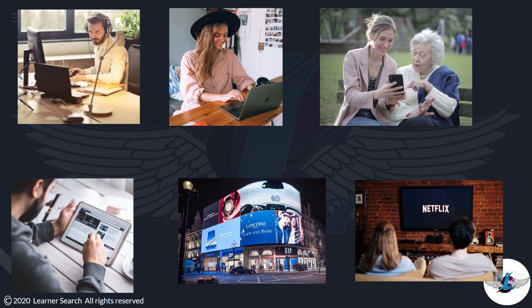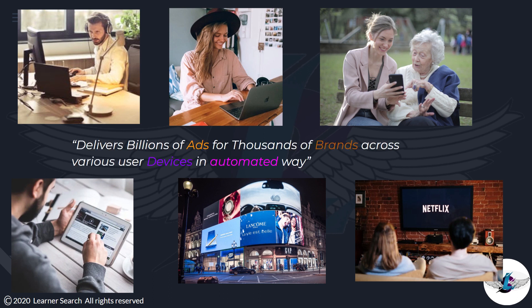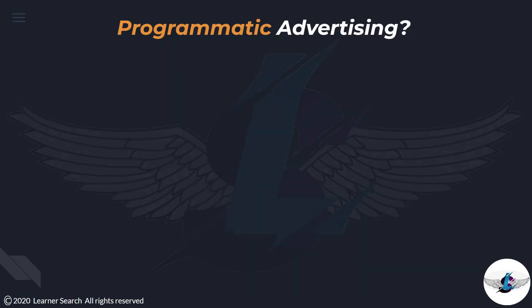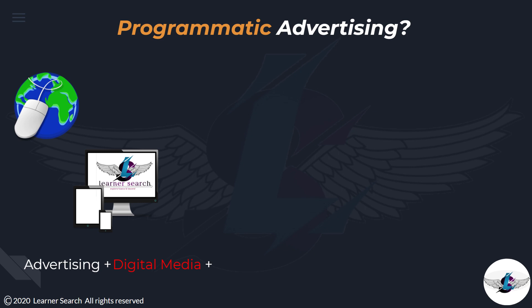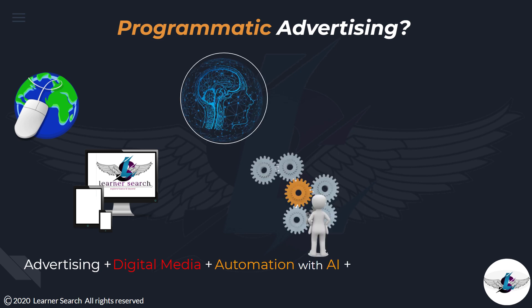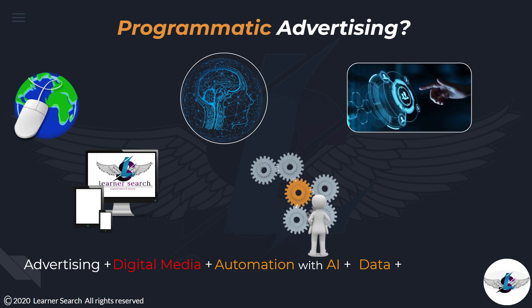— including other digital marketing channels, programmatic advertising helps choose and deliver billions of ads for thousands of brands across various user devices in an automated way. If you are running a business and want to advertise using online media with artificial intelligence and automated software tools, and taking advantage of audience data to target consumers in real time — we call this process programmatic advertising, which helps you spend each dollar in a way that brings value to your business.